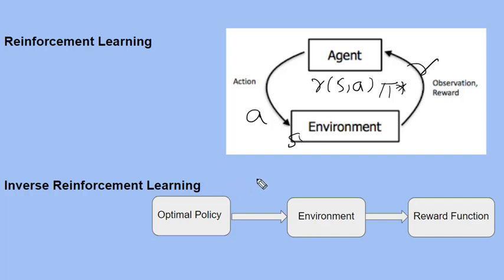Whereas, as the name suggests, in inverse reinforcement learning, it's quite the opposite. We already have the optimal policy, which are the expert demonstrations. These can be collected from humans or even machine-generated, and they interact with the environment to create a reward function that could regenerate or explain the behavior of those experts.